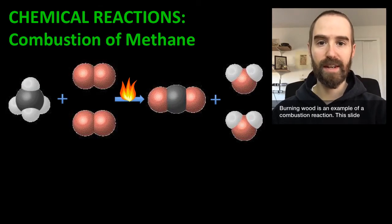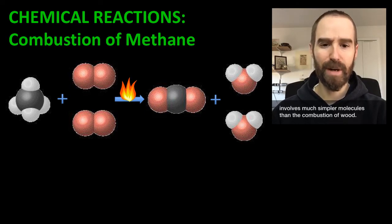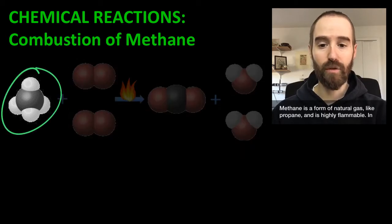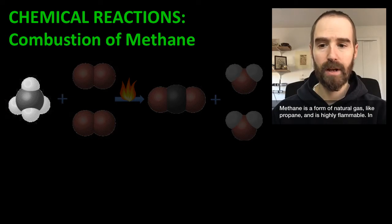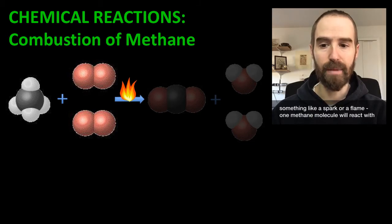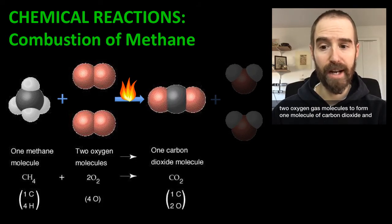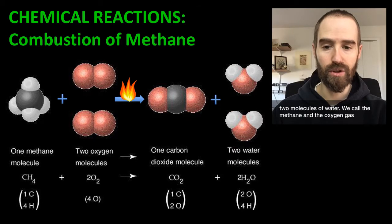Burning wood is an example of a combustion reaction. This slide depicts a similar reaction — the combustion of methane — which involves much simpler molecules than the combustion of wood. Methane is a form of natural gas, like propane, and is highly flammable. In the presence of oxygen and enough energy to start this reaction — maybe something like a spark or a flame — one methane molecule will react with two oxygen gas molecules to form one molecule of carbon dioxide and two molecules of water.